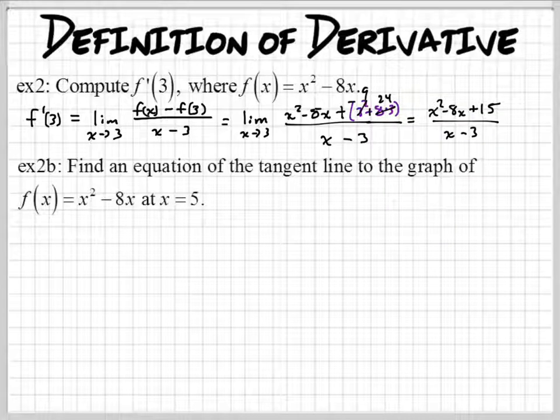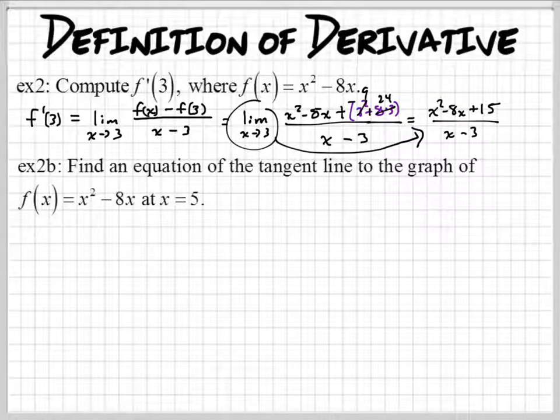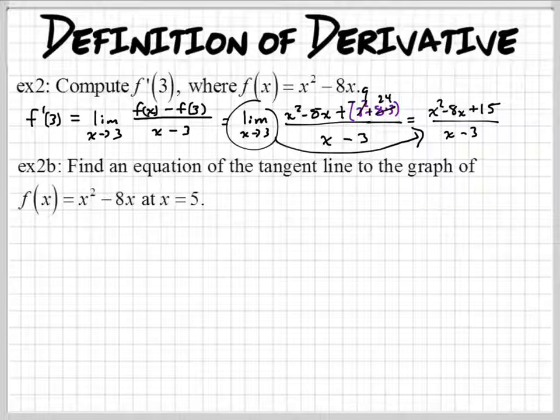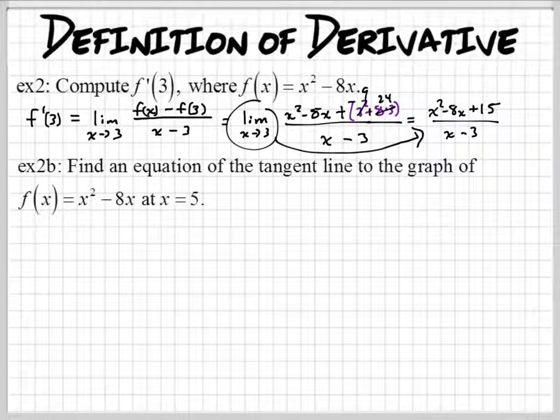So we distribute this negative. This is going to be 24, and this is going to be 9. So we have x squared minus 8x, and then we have negative 9 plus 24, which is positive 15. And on the bottom, we have x minus 3. Now, if we're taking the limits of this as x approaches 3, it doesn't work because we're going to get 0 on the denominator. So this is in indeterminate form. Do you guys remember what to do if it's in indeterminate form? We see if we can factor and simplify stuff.